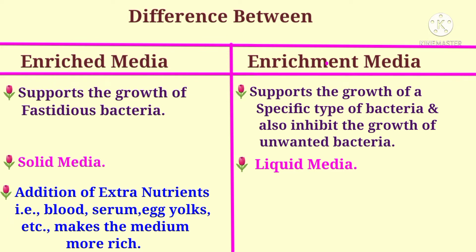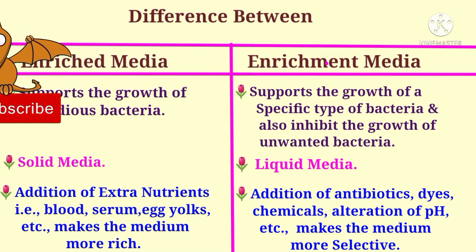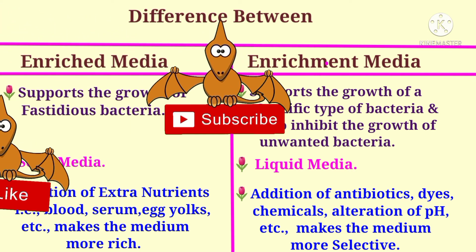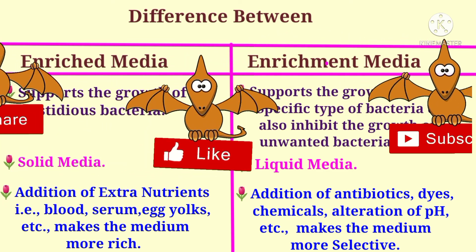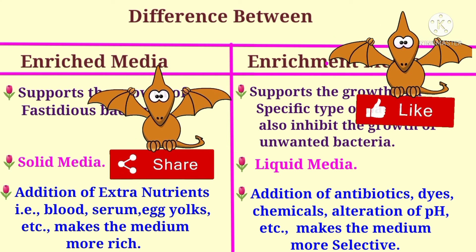In enrichment media, addition of antibiotics, dyes, chemicals, alteration of pH, etc. makes the medium more selective — that is, permitting the growth of a particular type of bacteria and inhibiting the growth of unwanted bacteria.